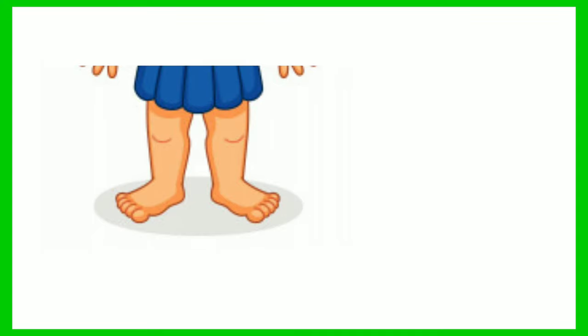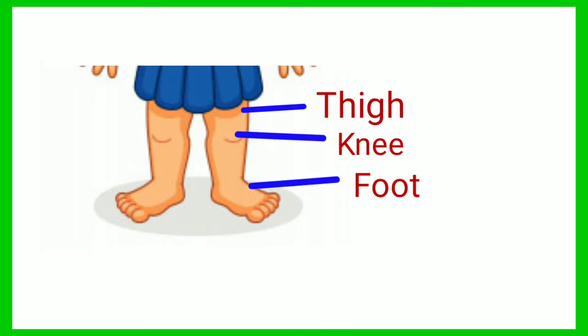We have two legs. Each leg has a thigh, knee and a foot. There are five toes on each foot.